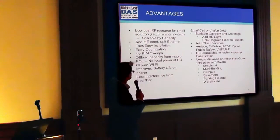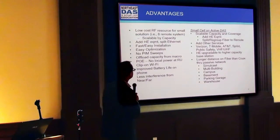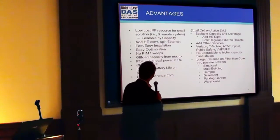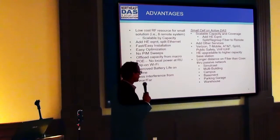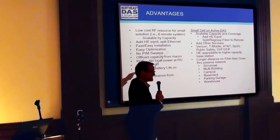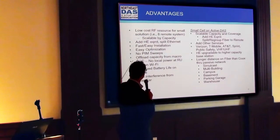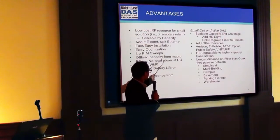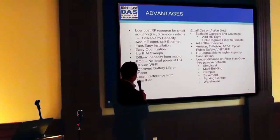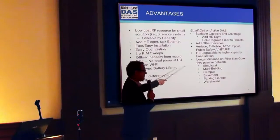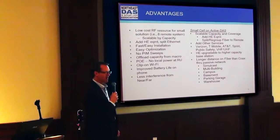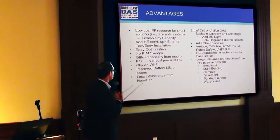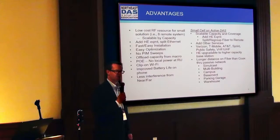Advantages, in terms of the small cell itself: it's a lower cost RF source for small enterprise. It's scalable by capacity, so you could add more PCIs and split them off your Ethernet. Add head-end equipment. It's a fast and easy install — optimization is only a couple of buttons, no pin sweeps required. It offloads capacity from the macro. Power over Ethernet means no local power at the remote unit, so no AC required in IDF closets. Spider Cloud has Wi-Fi integration with their Cisco system. You also have improved battery life on your phone and potentially less near-far interference.